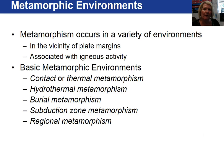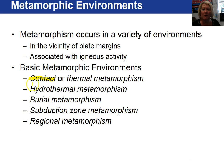This is video 3 for chapter 8 on metamorphism and metamorphic rocks. I want to discuss metamorphic environments. Metamorphism can occur in a variety of environments, oftentimes near plate margins and sometimes associated with igneous activity. The basic metamorphic environments include contact or thermal metamorphism, hydrothermal metamorphism, burial metamorphism, subduction zone metamorphism, and regional metamorphism. There are a couple of other ones I'll mention after I go into detail about these first five.